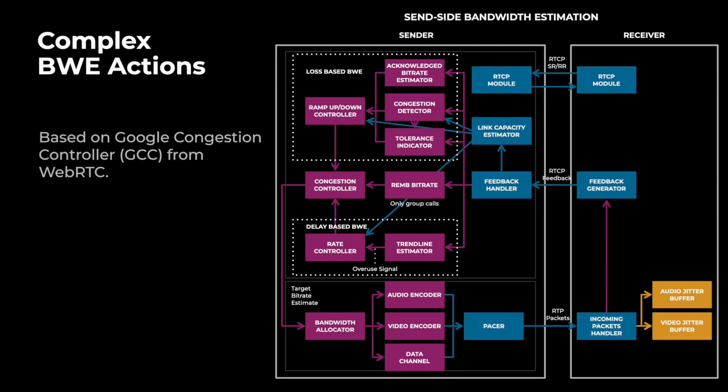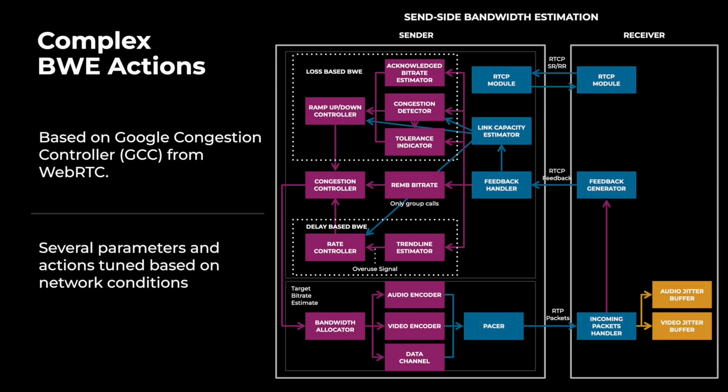Before we get into the details, let's look at the current bandwidth estimation algorithm. The current bandwidth estimation algorithm is based on Google's congestion controller from WebRTC. It is a sender-side bandwidth estimation algorithm, meaning the bandwidth is estimated based on feedback received from the receiver's side. It consists of several modules like loss-based BWE, delay-based BWE, and congestion pushback window.